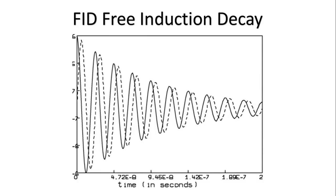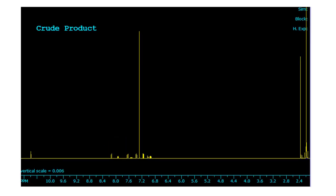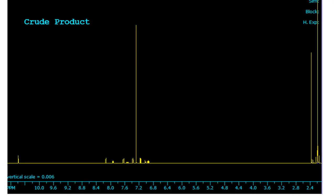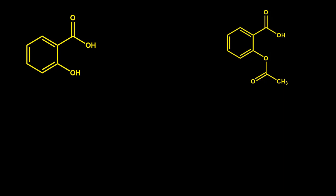After you've done your scans, you end up with something called a free induction decay (FID), but we can't read that directly. We perform a Fourier transform, which takes the FID and turns it into a readable spectrum. This is the spectrum for crude aspirin — salicylic acid is here on one side, and acetylsalicylic acid is on the other side.